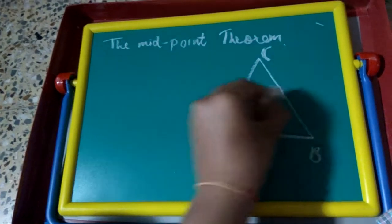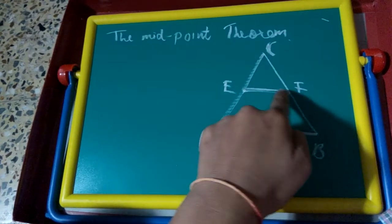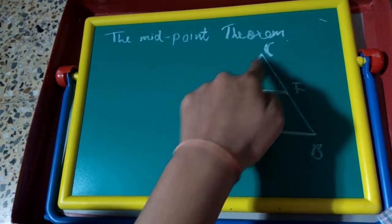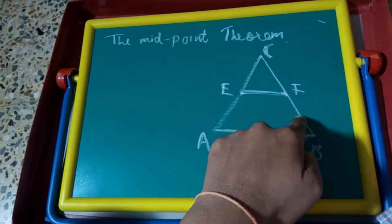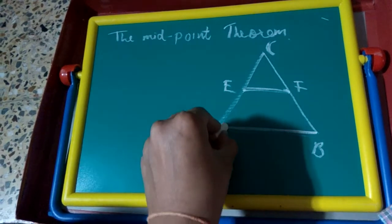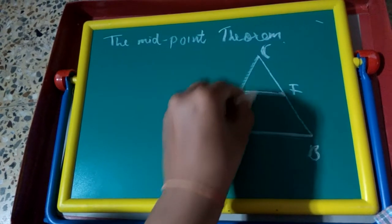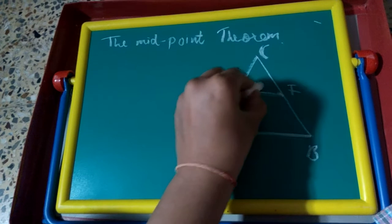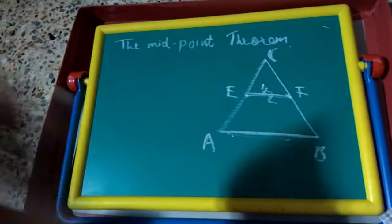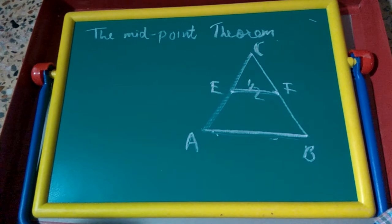...that line is EF. So the line joining the midpoints of any two sides of a triangle is parallel to and half of the third side. That is the midpoint theorem.